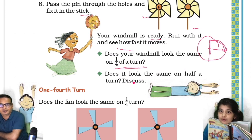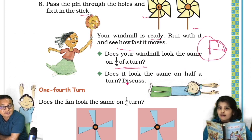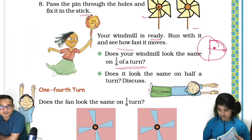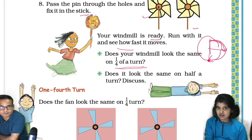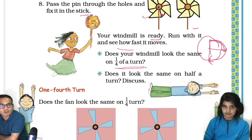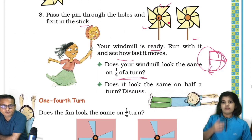Okay, it will look the same. Does it look the same on half a turn? Yes, it will look the same after half a turn also. Half a turn is this. So it will look the same because these four portions, this also same, this also same, this also same. So if you turn half or quarter it will look the same.